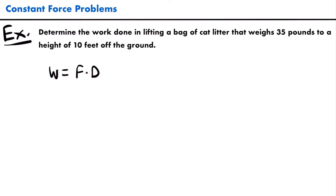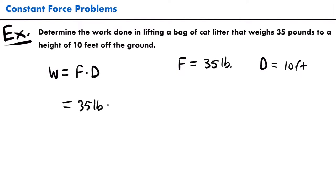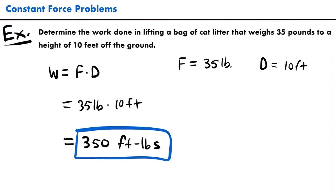In this problem we want to calculate the work done in lifting a bag of cat litter. The bag weighs 35 pounds — that is our force, since pounds is a unit of weight that already accounts for gravity. The displacement is 10 feet. So work equals 35 pounds times 10 feet, which equals 350 foot-pounds. Foot-pounds is the unit of work in the US customary system.